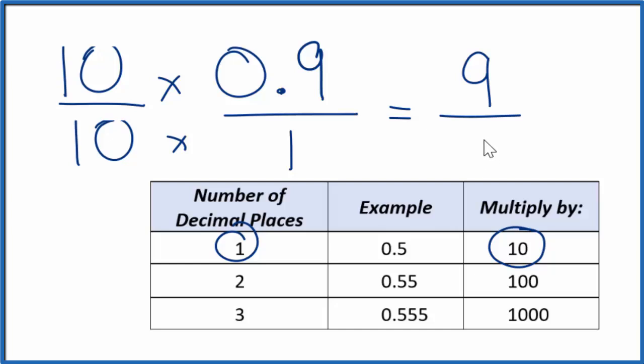So 10 times 1, that is 10, and we have our fraction 9 tenths. If you were to divide 9 by 10 in this fraction here, you would end up with 0.9.